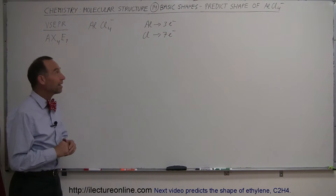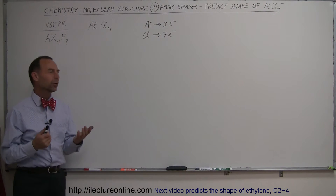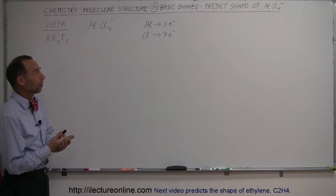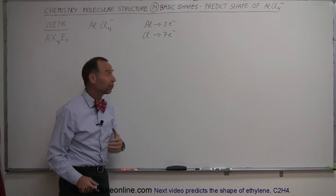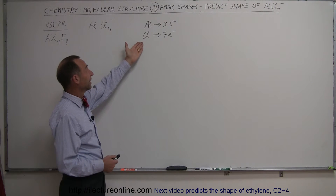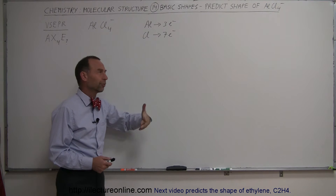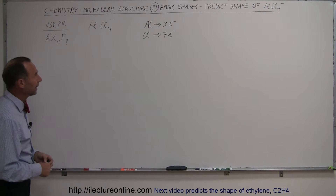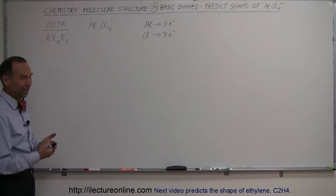For our next molecule we have an ion. It's called aluminum tetrachloride. Why would aluminum tetrachloride be an ion in the first place? Well, aluminum only has three valence electrons. So if it's going to form bonds with four chlorines — chlorines have seven valence electrons, so they're looking for single bonds to come up with that eight valence electron count — you probably need an additional electron to accomplish that.